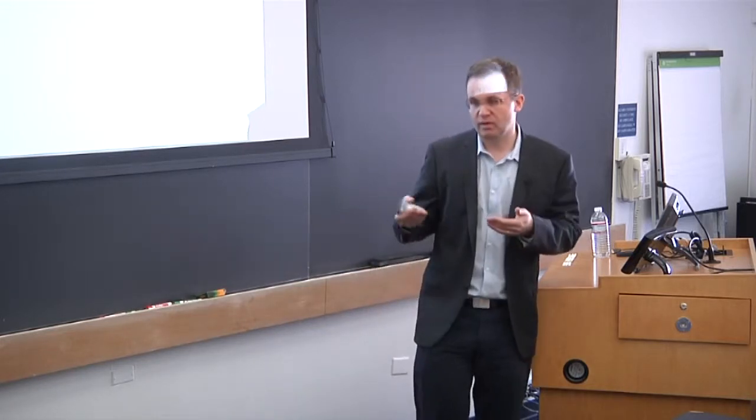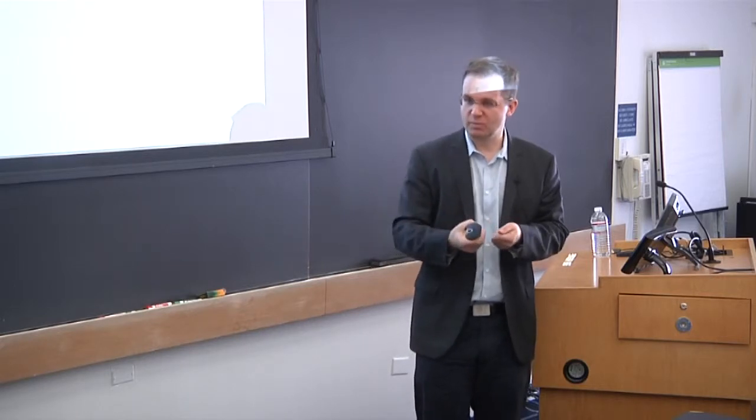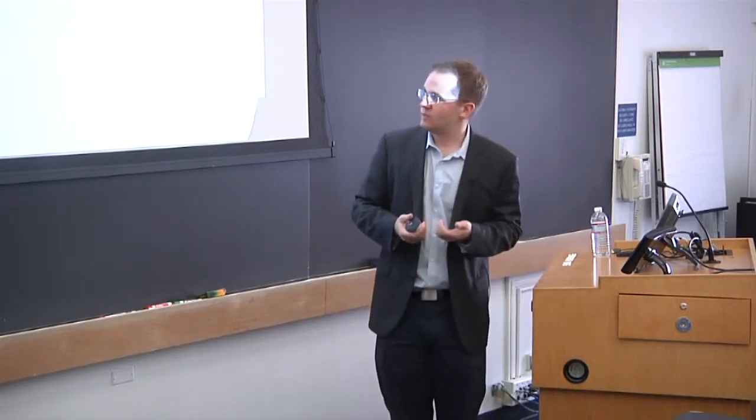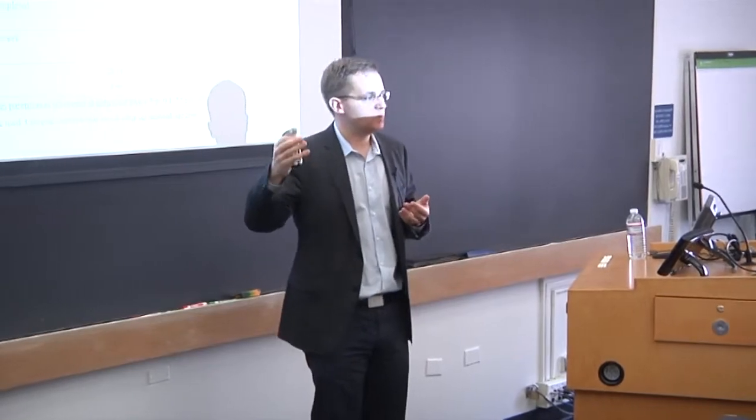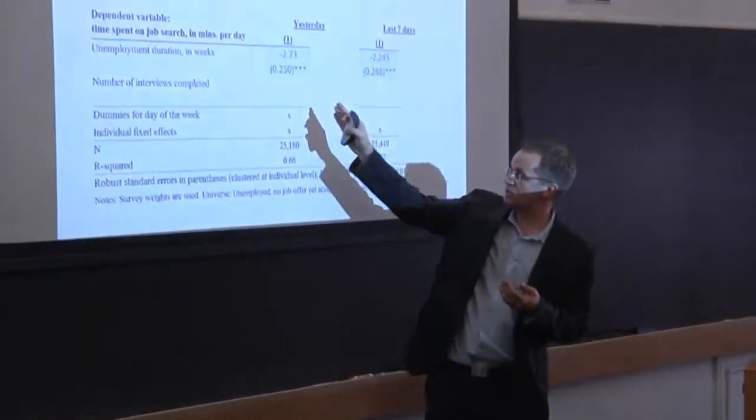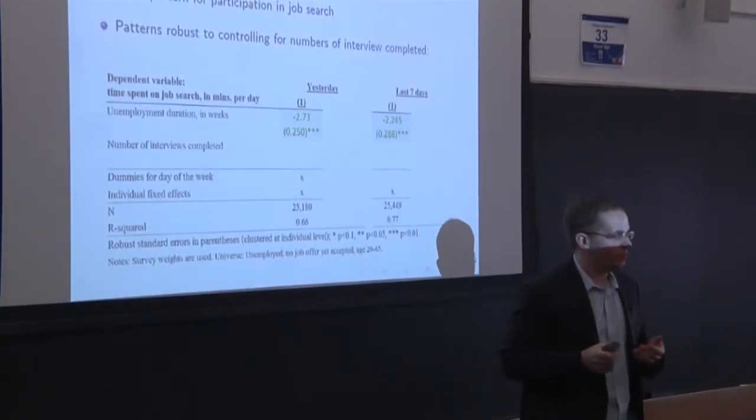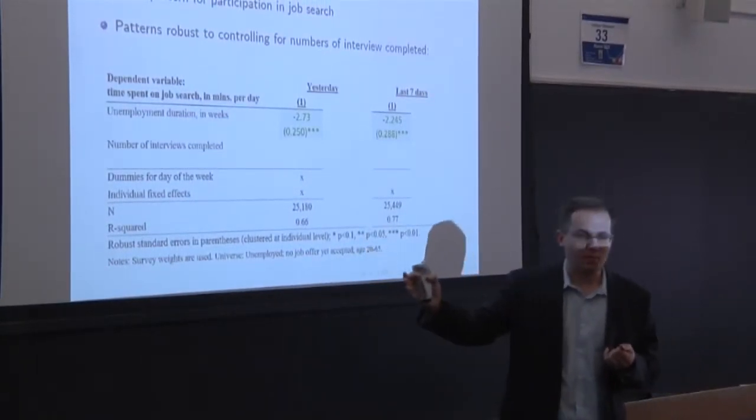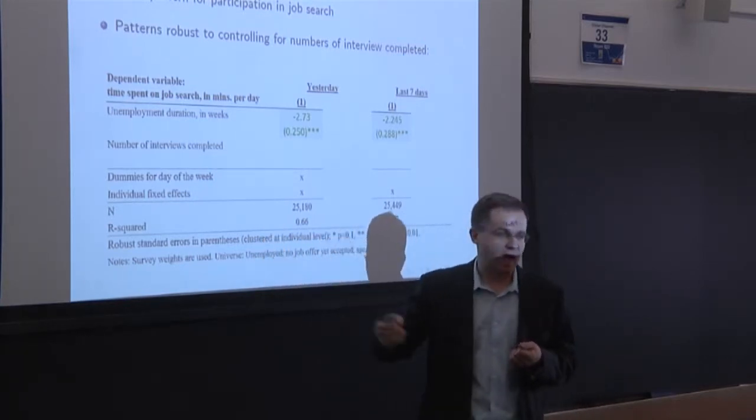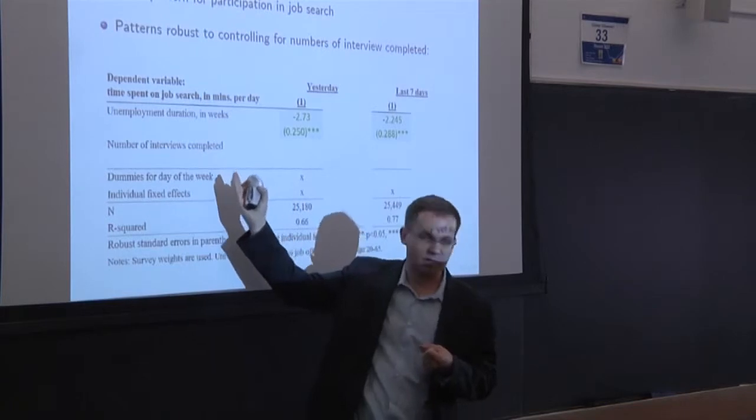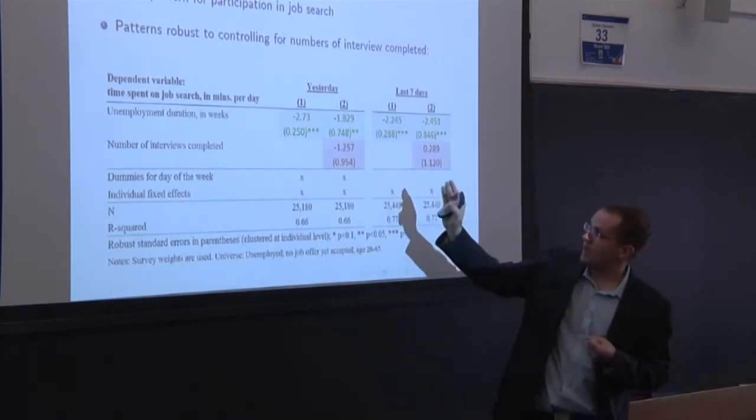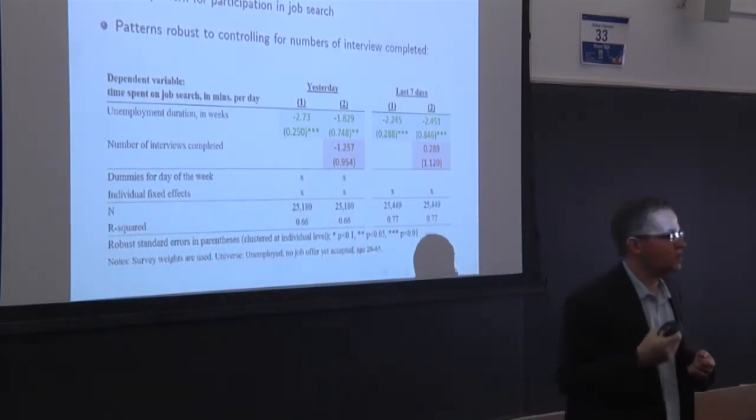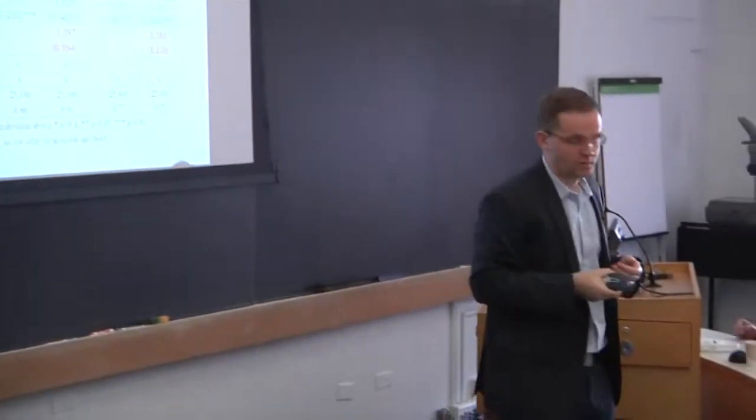So you would think that people that answer the survey every week, they really learn how the survey works and therefore should be better able to kind of cheat the survey. So we can run the regression, compare basically, so this here is a regression that runs time spent on job search, so job search intensity on unemployment duration. So we just see here this strong decline in search intensity. And then I run basically a horse race between that measure and number of interviews completed. So if it's really driven by how many interviews you have completed, then this should really be the main explanatory variable. If it's really driven by unemployment duration, this should be the explanatory variable. And it turns out this survives, the unemployment duration survives, so it's not just reporting bias. Reporting bias might explain some of these patterns, but not everything.